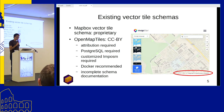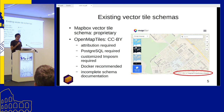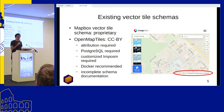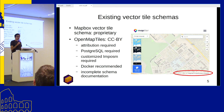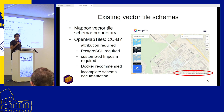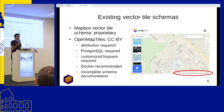Existing vector tile schemas: there are basically two important schemas on the market. There's the Mapbox vector tile schema — it's proprietary and therefore not a choice for us. And there's the OpenMapTiles schema by MapTiler, licensed under a Creative Commons Attribution license, which is a no-go because we do not want to advertise for our competitor. It needs Postgres and a customized Imposm version to generate tiles. They recommend Docker because the setup is very complicated, and the schema documentation is incomplete.